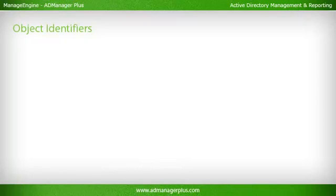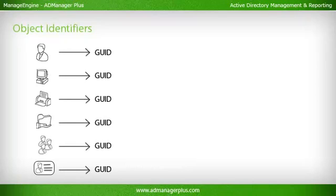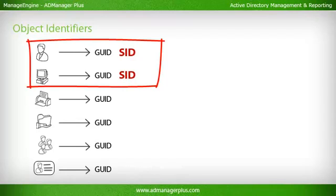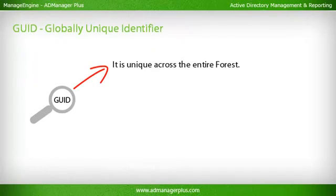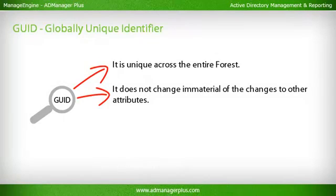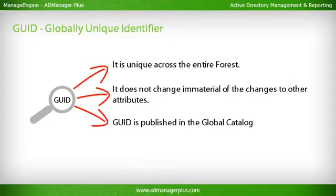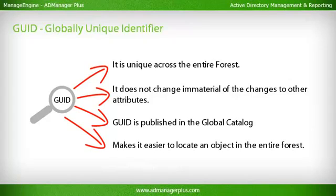Object Identifiers: Each object will have a globally unique identifier. Security principals will have a security identifier as well. GUID (Globally Unique Identifier) is unique across the entire forest. It does not change regardless of changes to other attributes. The GUID is published in the global catalog, making it easier to locate an object in the entire forest.